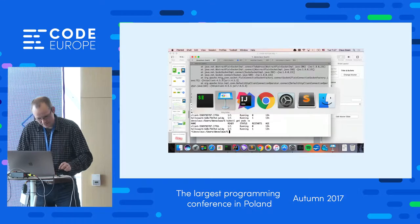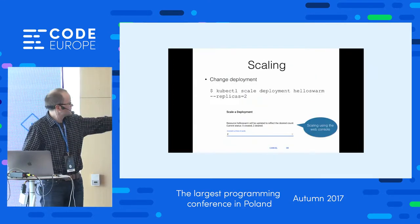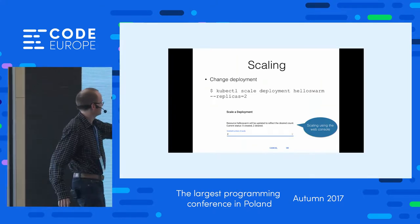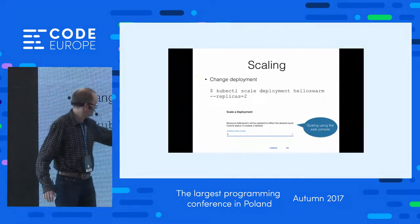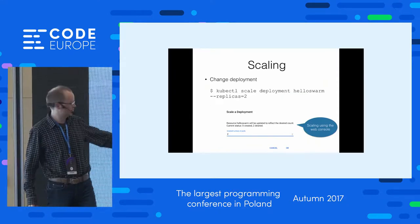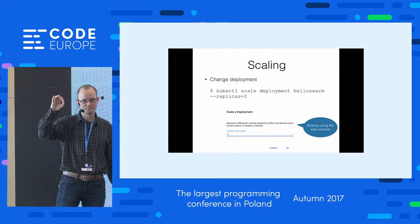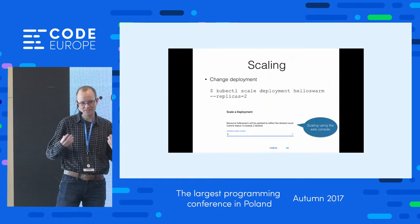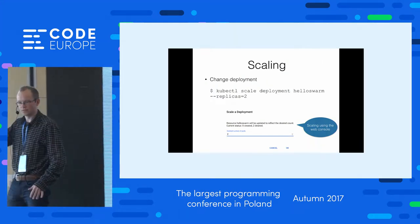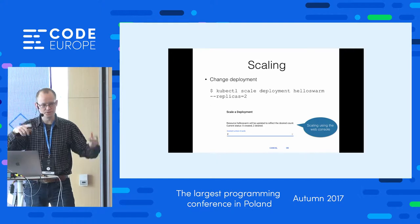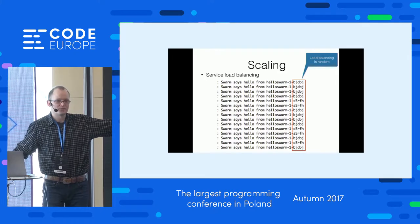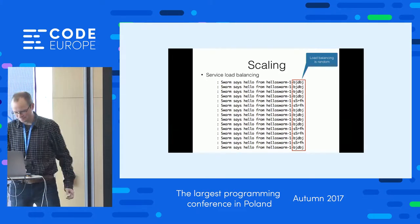So just to recap: we could scale up a deployment using kubectl scale with a replicas count. If you want to stop an application, you can scale it down to zero, or delete it. There's also a way to scale using the web console — there's a scale button on the deployment where you choose how many instances to run. We saw that load balancing is random, not round robin, though you can choose a different algorithm.